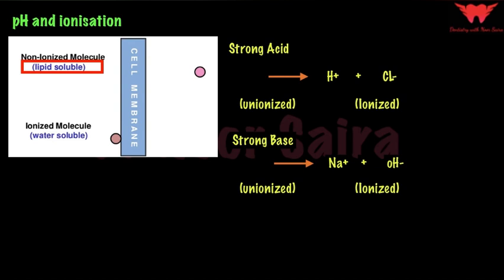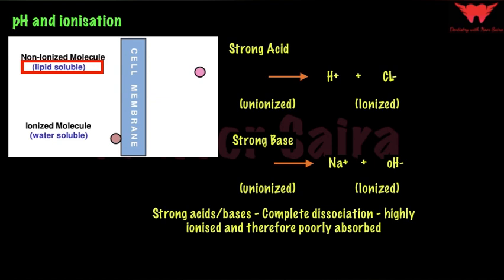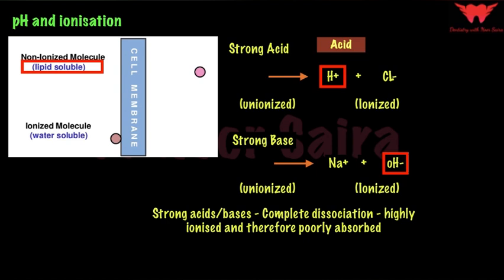Strong acids and strong bases completely ionize, leaving only the ionized part — the unionized part is absent. Since unionized molecules are lipid-soluble, strong acids and strong bases, being highly ionized, are poorly absorbed. In a strong acid, it is the H+ ions responsible for acidity, and in a strong base, it is the OH- ions responsible for alkalinity.